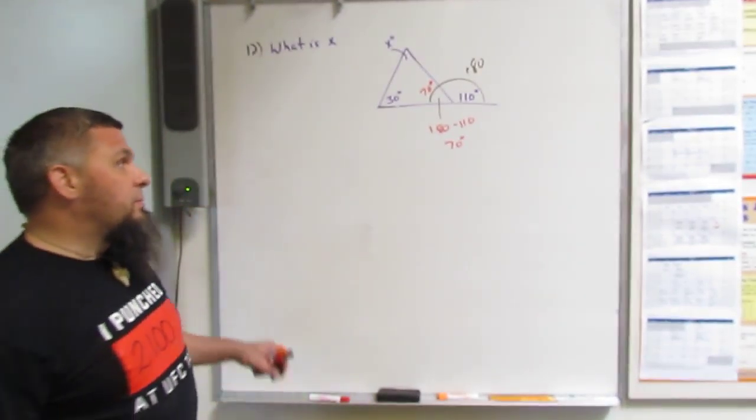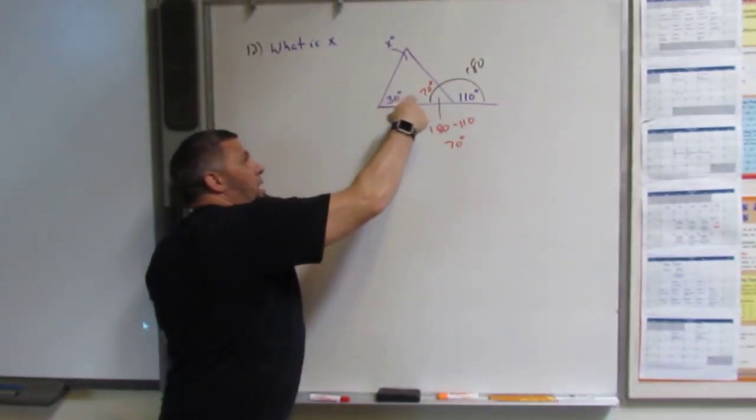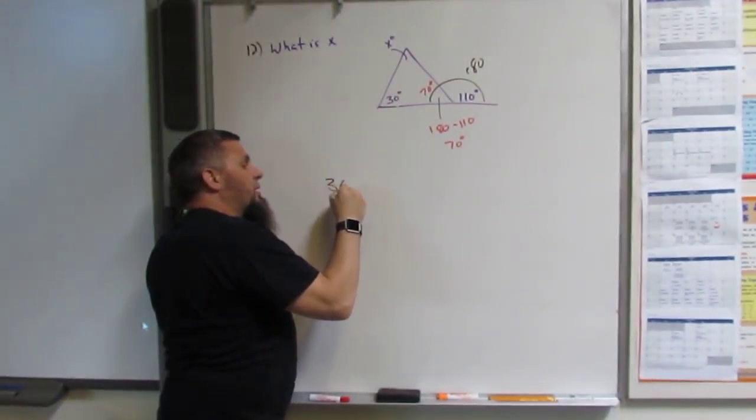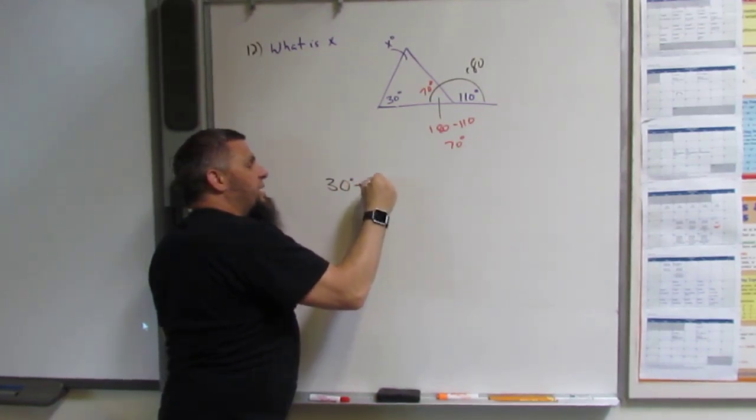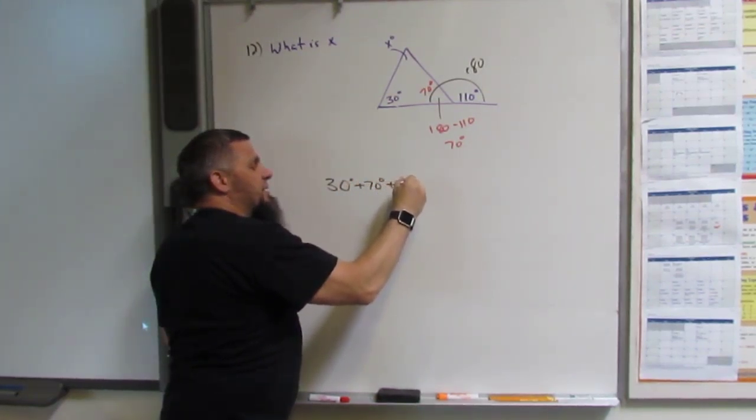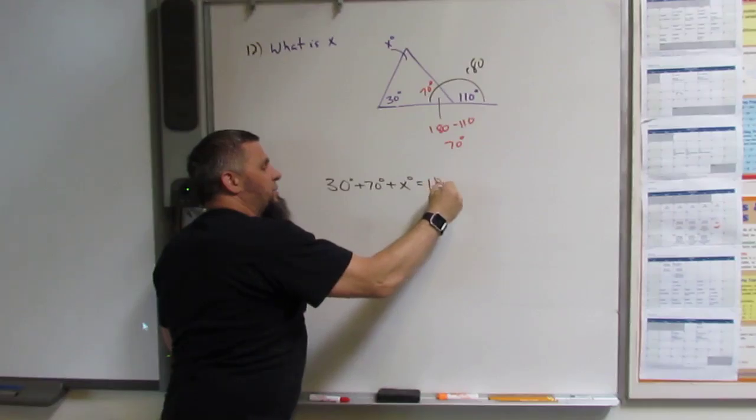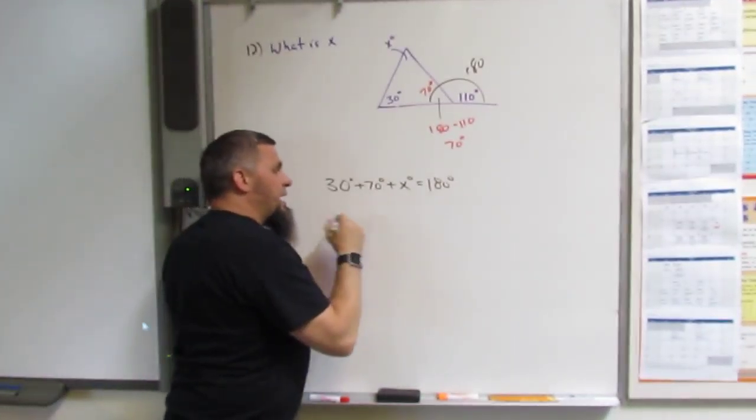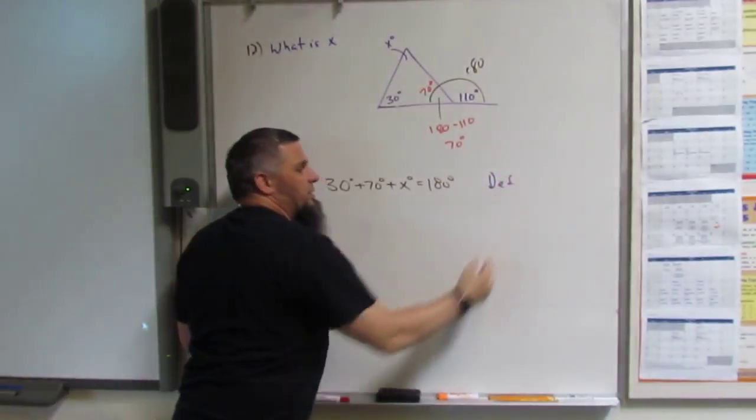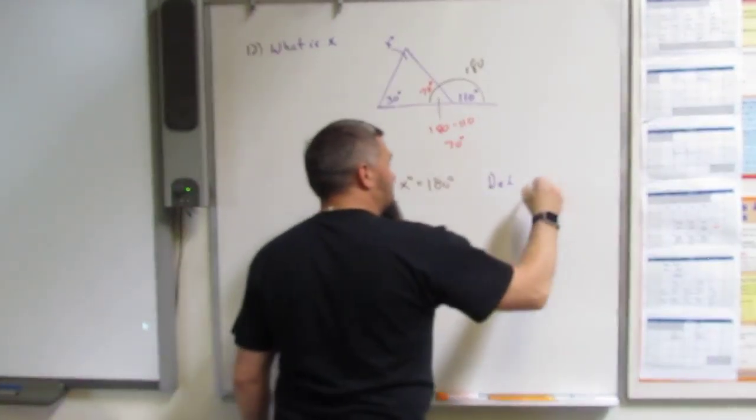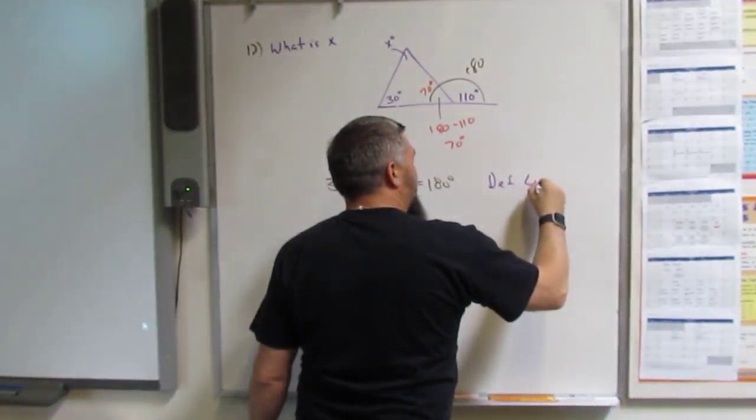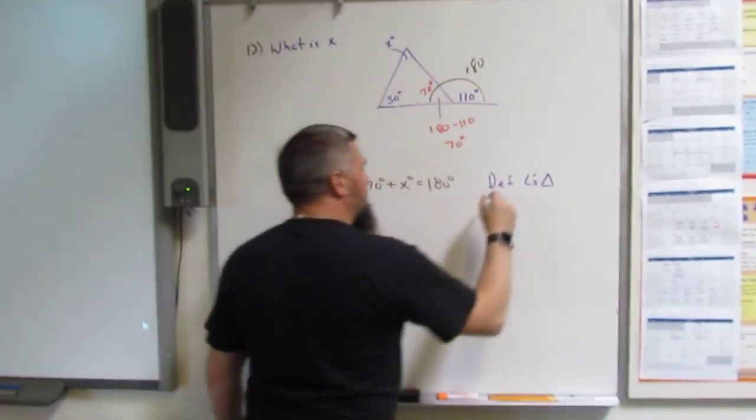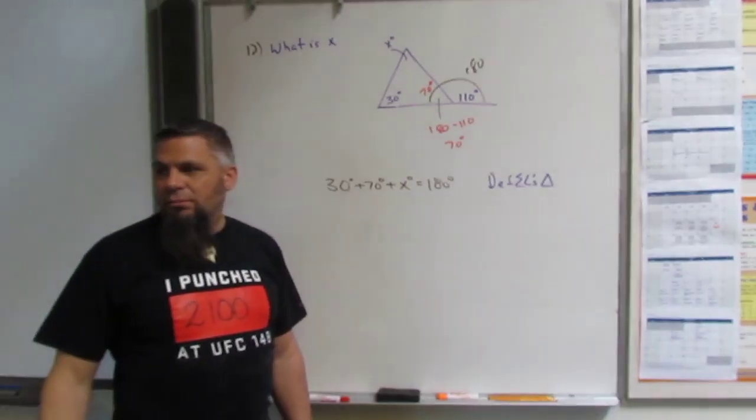70 plus 30 is 100, which makes it 80. All three of these, 30 plus 70 plus X equals 180. So then we have, and that's definition, right? Of a triangle, of an angle of a triangle, right? The sum of the angles of a triangle, right?